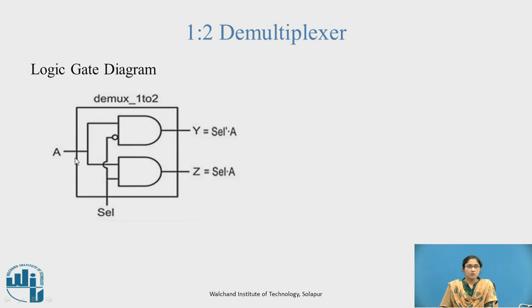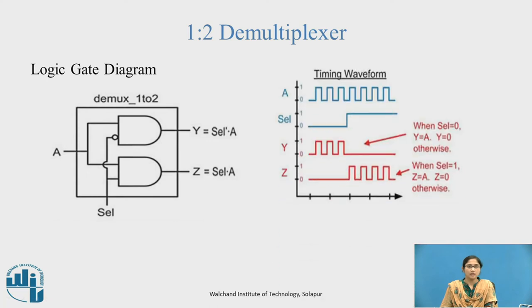Logic gate diagram: When input data A is 1 and select is 0, the first AND gate is enabled, so Y equals 1. When A is 1 and select is 1, the second AND gate is enabled, producing output Z equals 1. The timing waveform shows A as a clock pulse with shorter time period and select as a clock pulse with maximum time period. Y equals A when select is 0, and Y equals 0 otherwise. Z equals A when select is 1, and Z equals 0 otherwise.